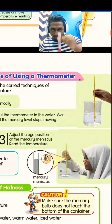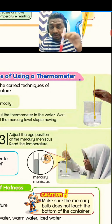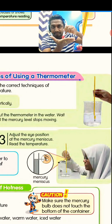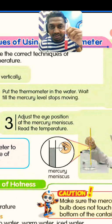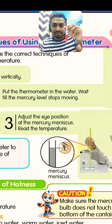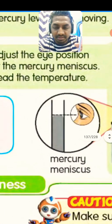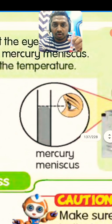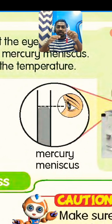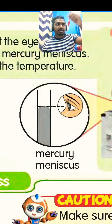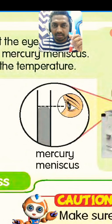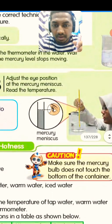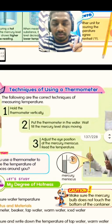Number two: put the thermometer in the water and wait until the mercury level stops moving. Make sure the thermometer does not touch the base of the beaker, because the temperature of the base can affect the reading. Number three: adjust your eye position to be parallel to the mercury meniscus level to get an accurate reading — if your eye is too high or too low, the reading will not be accurate.